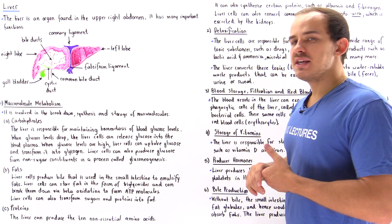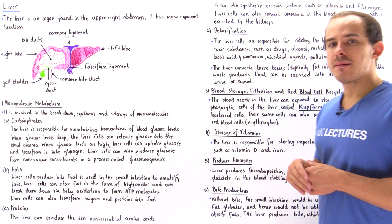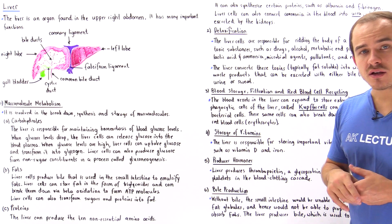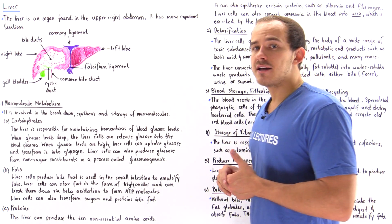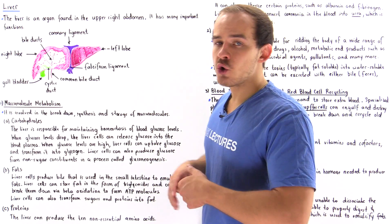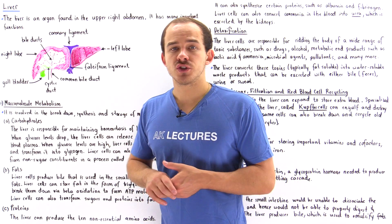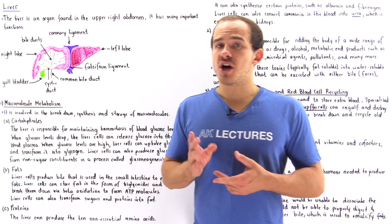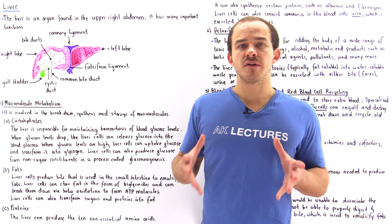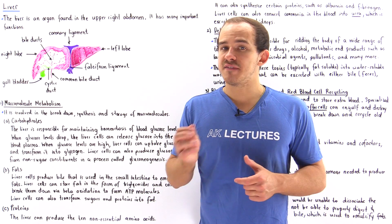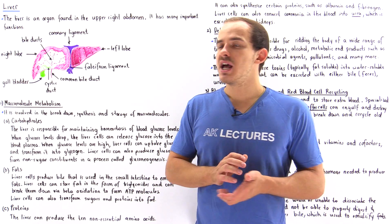Let's begin by describing what the liver looks like and where the liver is found in the body. The liver is located in the upper right abdomen portion of the body, found to the right of our stomach.